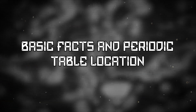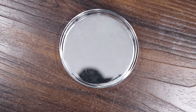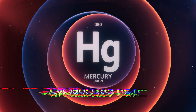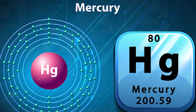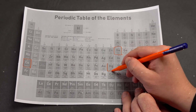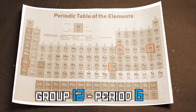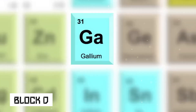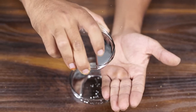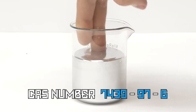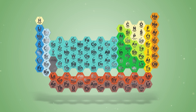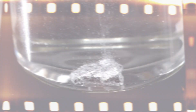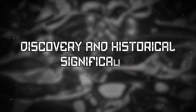Let's start with some basic facts about mercury. Symbolized as Hg, mercury is a transition metal with an atomic weight of 200.59. You can locate it on the periodic table in group 12, period 6, and block D. The element's CAS number is 7439-97-6. Understanding mercury's position on the periodic table helps us appreciate its chemical behavior and reactivity, discovery, and historical significance.